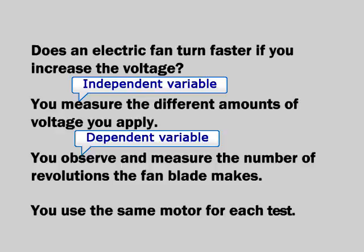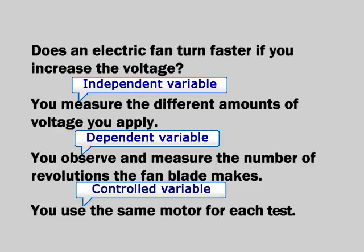To make sure the only thing we're measuring is the response to different amounts of voltage, we have to control the variable of the type of motor — so we'd use the same motor for each test. That way we isolate the single thing we're trying to measure. Understanding the use of variables is key to understanding the scientific method, and it's the key to interpreting, looking at, and evaluating experiments — which is really what you're doing in the science passages.